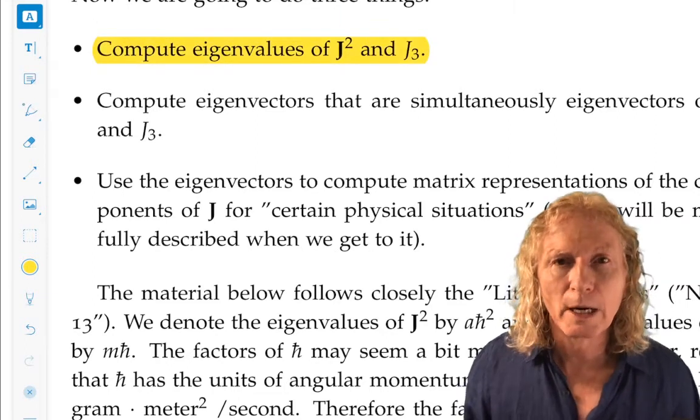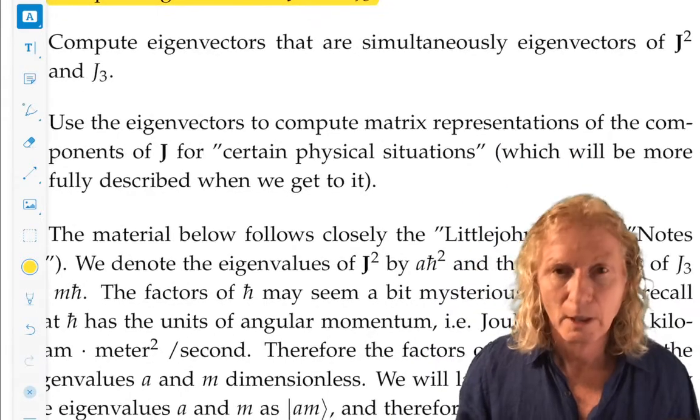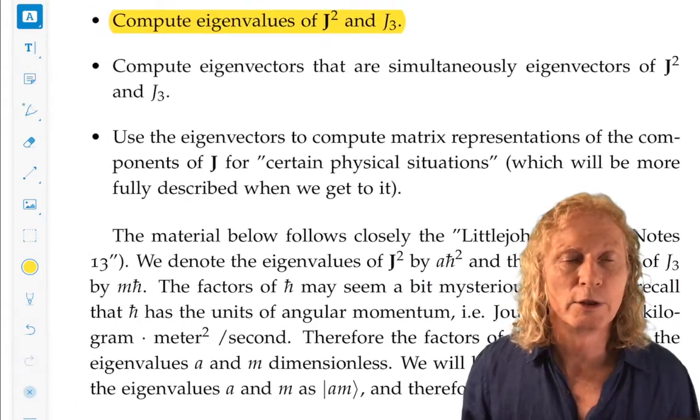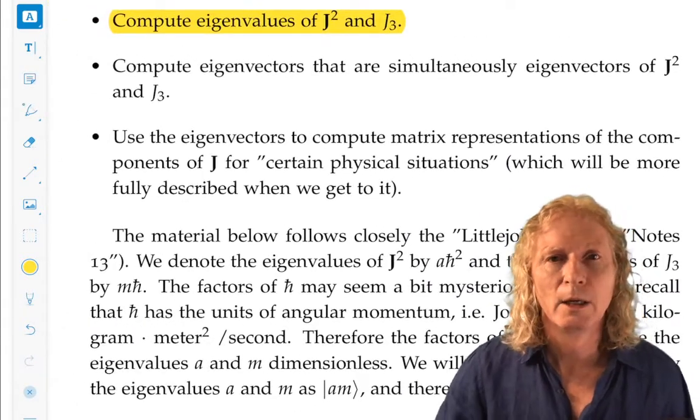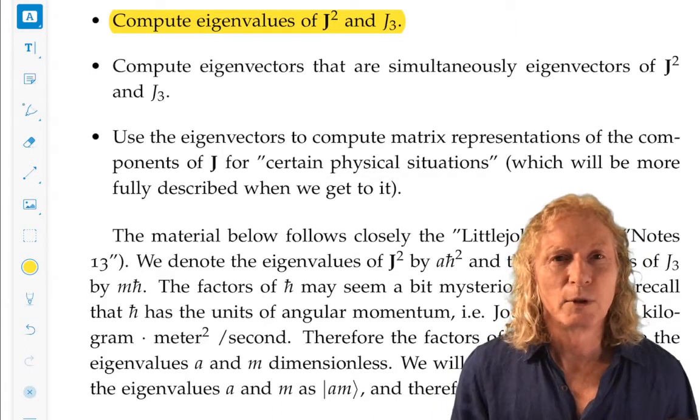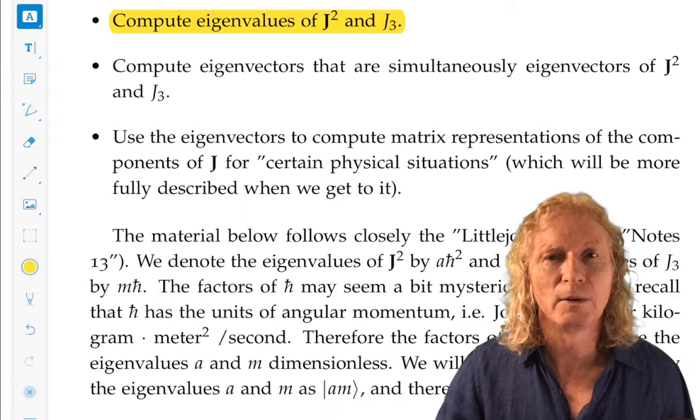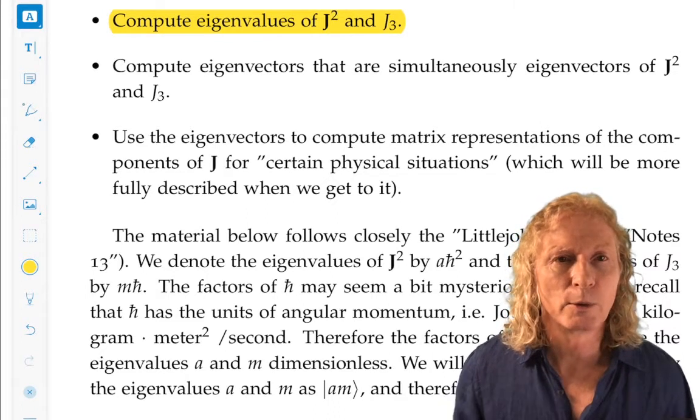We're going to compute eigenvectors that are simultaneously eigenvectors of j squared and j3. We know we can do that, we know they exist, so we can devise a scheme to come up with the common eigenbasis since j squared and j3 commute.